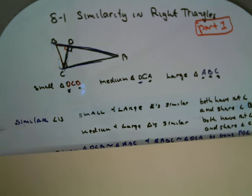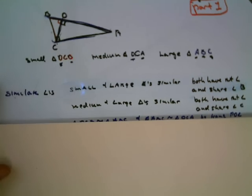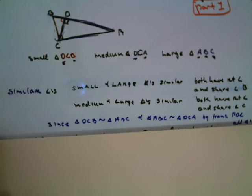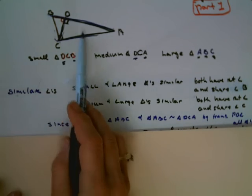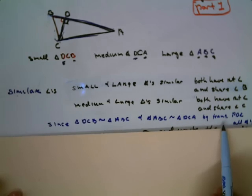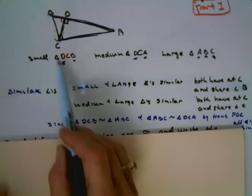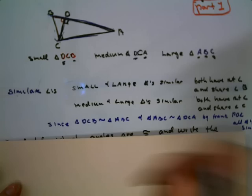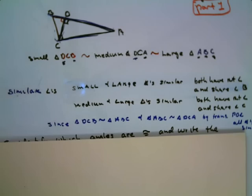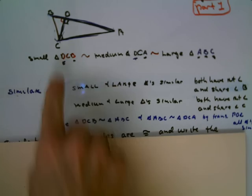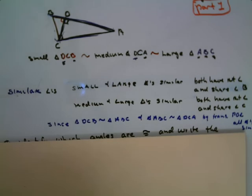Now, once you know that, you can say, since the small one is similar to the large one, and the medium is similar to the large one, by the transitive property, we know that all three of these triangles are similar. So we can say this triangle is similar to this triangle is similar to that triangle. And once you know that, all kinds of interesting things can happen. If we know a couple of these lengths, we can find every length in the figure. That's what we're going to be doing. And when we do it, we're going to be doing what's called finding the geometric mean.